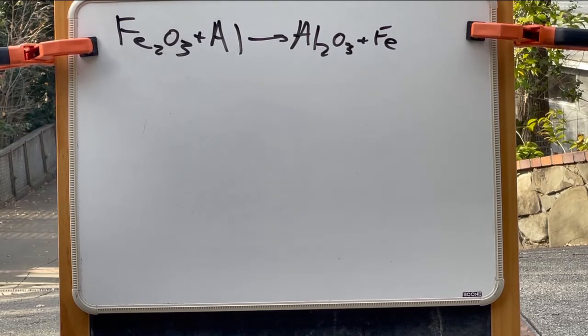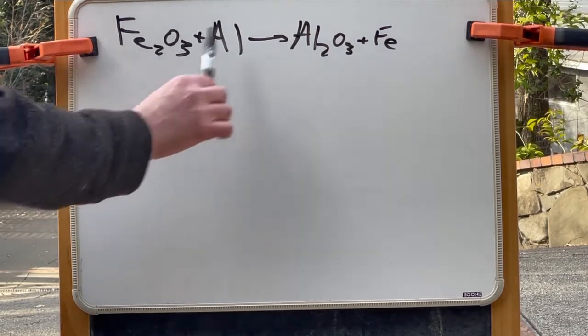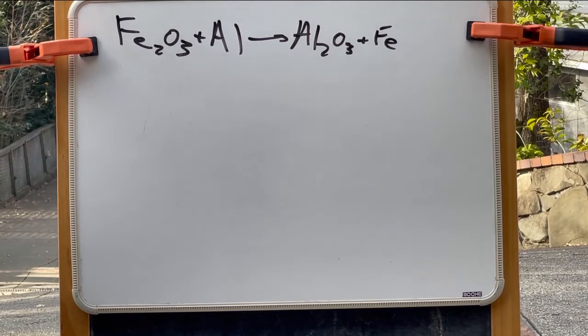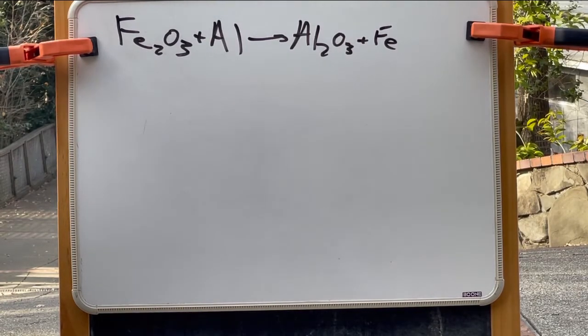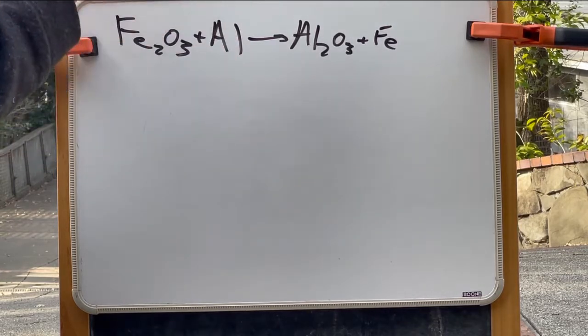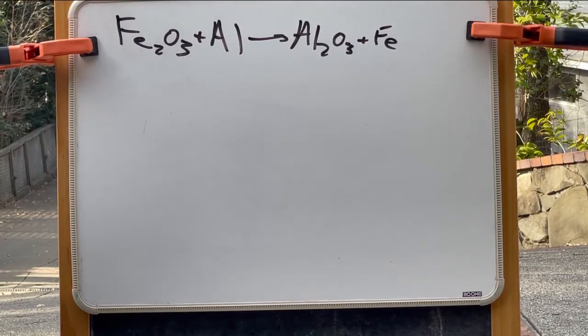When we look at this equation we see there's a problem. The number of atoms on the two sides of the equations are not equal. Because this is chemistry and not nuclear physics, whatever atoms we start with we have to end up with the same type and number of atoms and hence we have to balance the equation.